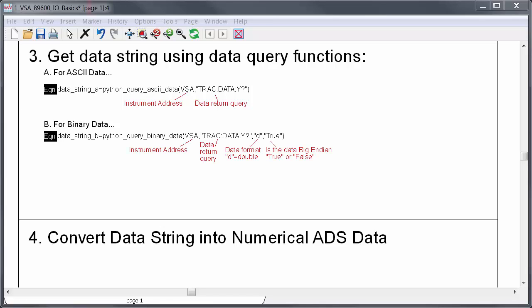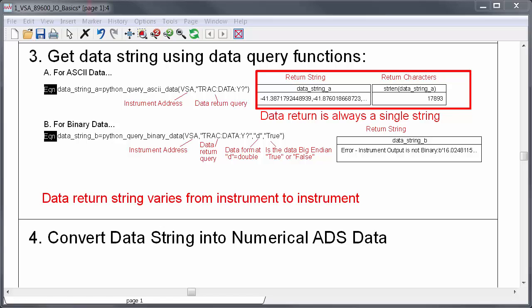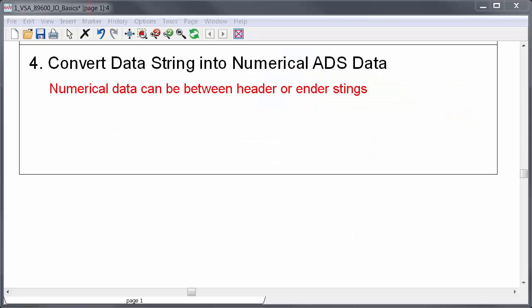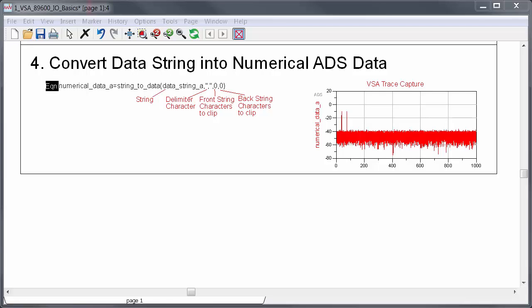Here, I'll use the ASCII function, Python query ASCII data, but there's also a binary data query function in ADS. And for that, you need to specify data format and also a boolean string for Big Endian. The functions usually recognize if the data is in the right format. Here, the binary equation gives an error saying that the data doesn't appear to be binary. But we could switch the instrument mode to be binary if we wanted to, and then this equation would work. Both data query functions will always return a single string of data. As someone who's worked with a lot of instruments, I know that the return data can vary dramatically depending on instrument. Sometimes the data is sandwiched between headers or enders or random characters, but the end goal is always to convert this data string into a numerical array. To do that, there's a function called stringToData. So you specify the data string, then the delimiter character, then because the string may potentially contain other stuff, you can also specify the number of characters to clip from the front and the back of the string. So if there was a header before the data, I would clip that off prior to converting the data. In this case, there are no extra characters, so no clipping is needed. 00 means convert the entire string to numbers. And now I have the trace data from the VSA in ADS.